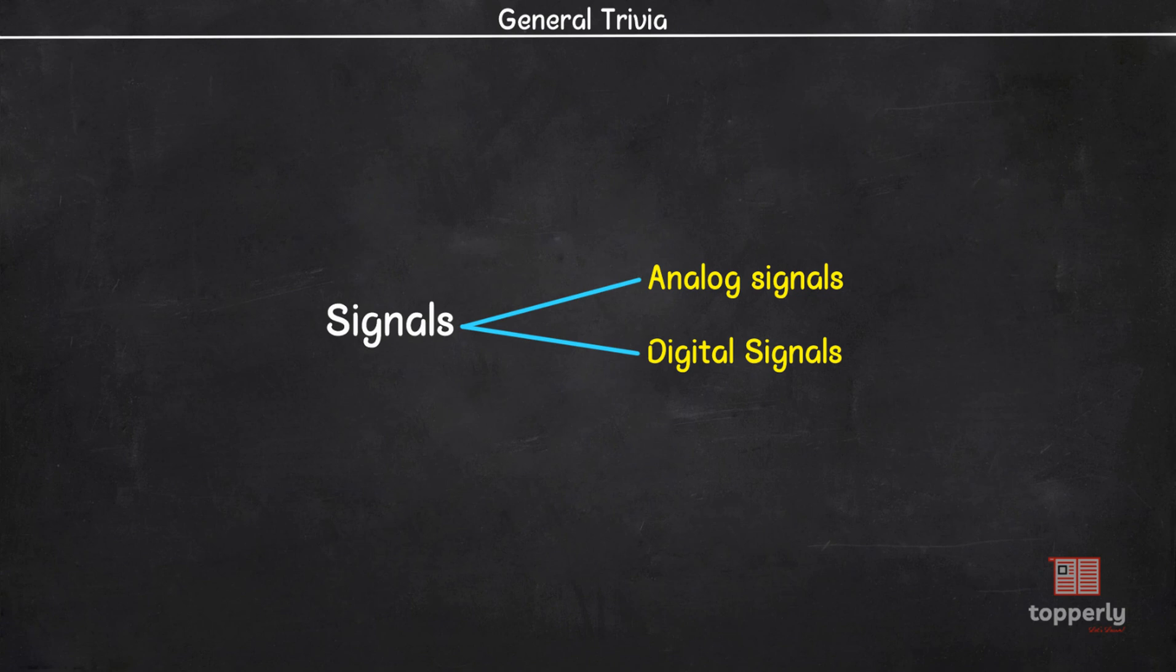But that's not the full picture. We have two more additional signals by definition. They are continuous signals and discrete signals. So what is the difference between these four signals? Let's learn that now.